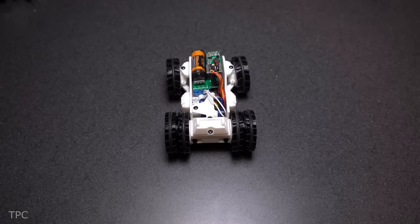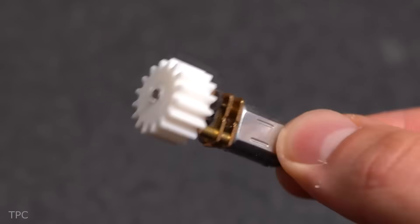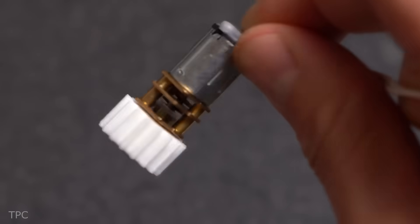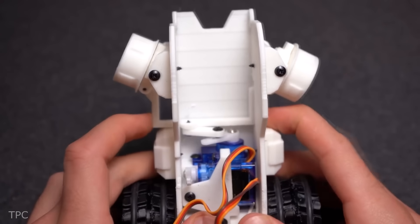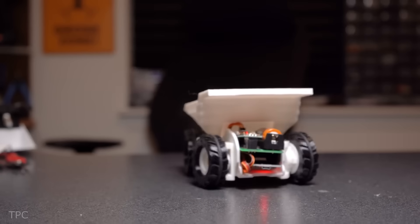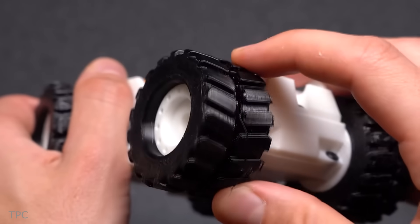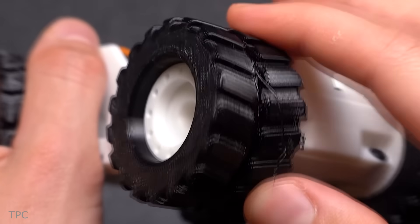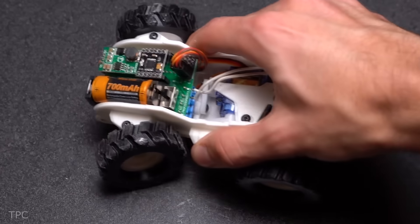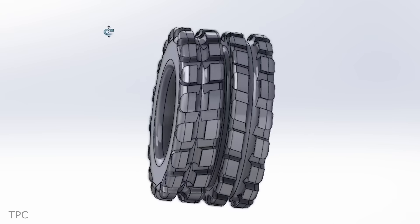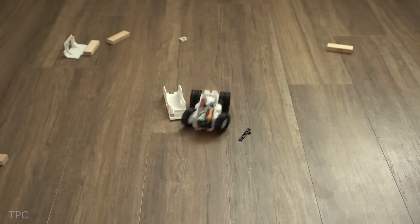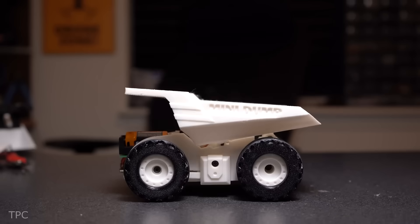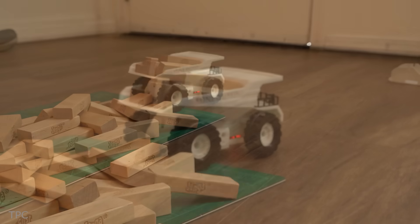He opted for a two-wheel drive setup, where the rear wheels are powered by a DC-geared motor. The front wheels are connected to a steering linkage controlled by a servo motor, allowing the truck to turn smoothly. The tires were also 3D printed from a flexible material, but they initially lacked enough traction. To solve this, he added rubber rings around them, transforming the truck into an off-roading beast. After attaching the dump bed, his RC truck was ready to roll.